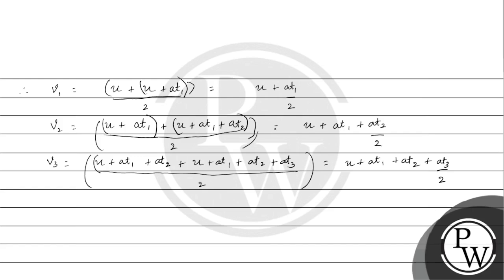Now taking the differences, v2 minus v1 is equal to u plus a t1 plus a t2 by 2 minus u plus a t1 by 2. Simplifying this, we will get a by 2 into t1 plus t2.